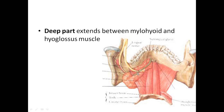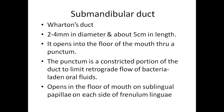The duct begins from the deep part. It runs forward and opens into a projection on the lower surface of the tongue called the sublingual papilla. This duct is called Wharton's duct; its length is approximately 5 centimeters and its diameter is 2 to 4 millimeters. It opens into the floor of the oral cavity through a punctum called the sublingual papilla. The punctum is a constricted portion of the duct that prevents retrograde flow and the entry of bacteria into the gland.